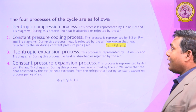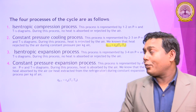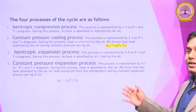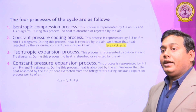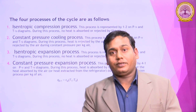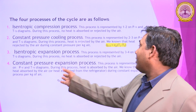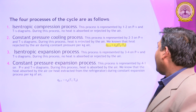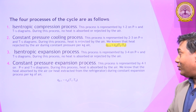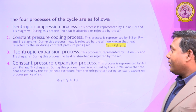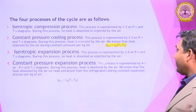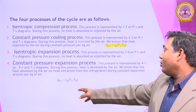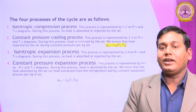The third process is the Isentropic Expansion Process. In the Isentropic Expansion Process, there is no heat rejection and no heat supplied. The fourth process is the Constant Pressure Expansion Process. During this process, heat is absorbed — the heat extracted from the refrigerator during the Constant Pressure Expansion process. This is Q41 equal to Cp times (T1 minus T4).